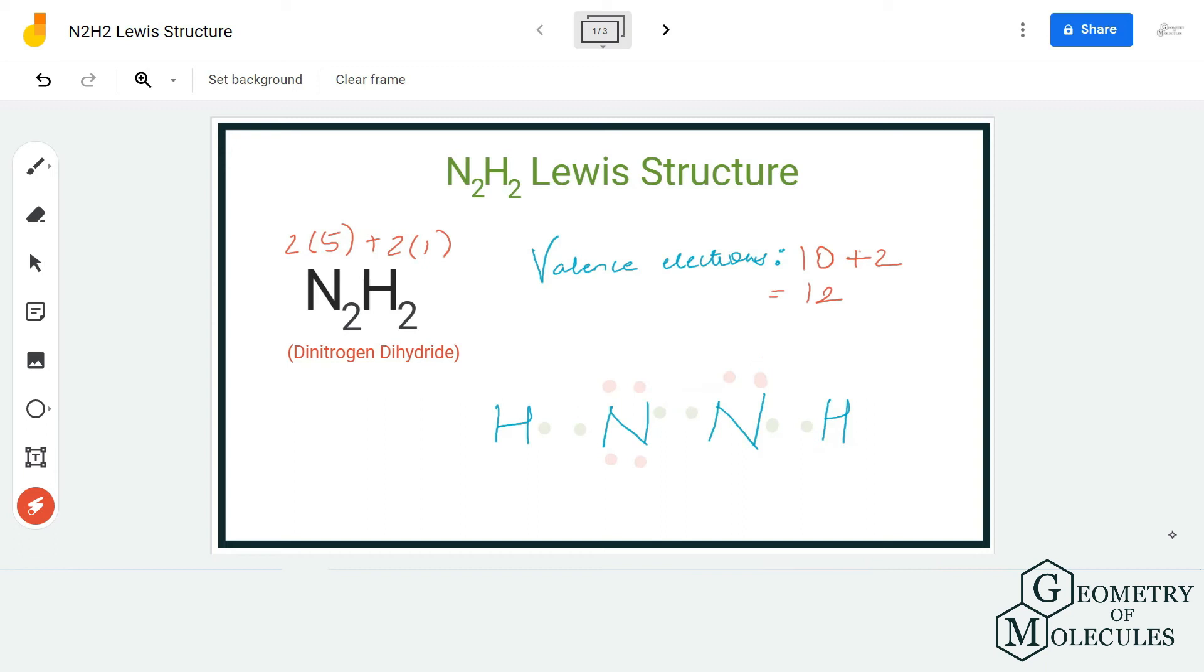To ensure that both these atoms have a complete octet, we can move this electron pair here and check if we can achieve a complete octet for this nitrogen as well.